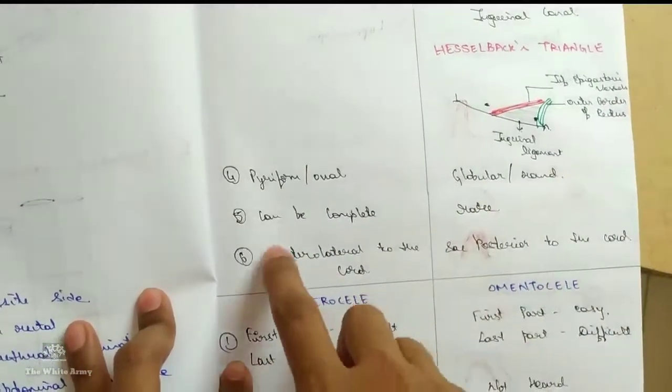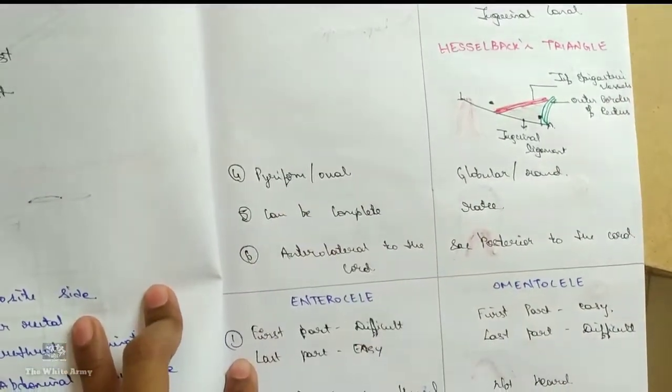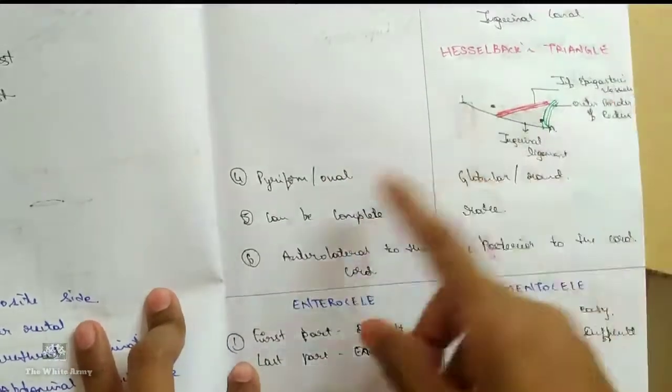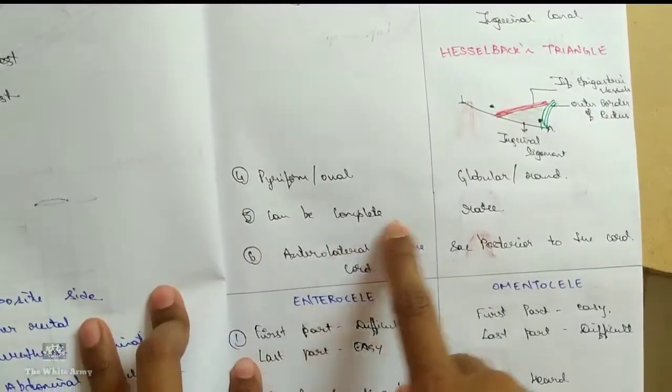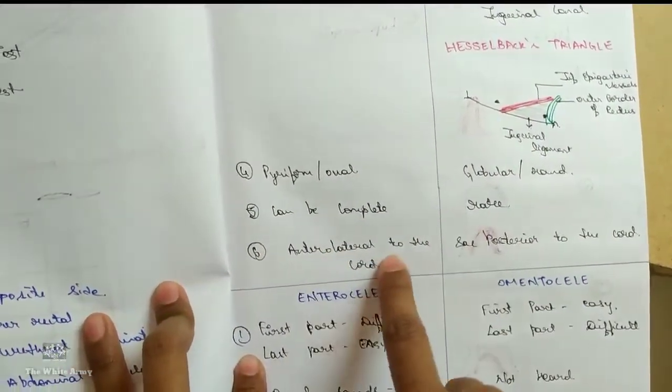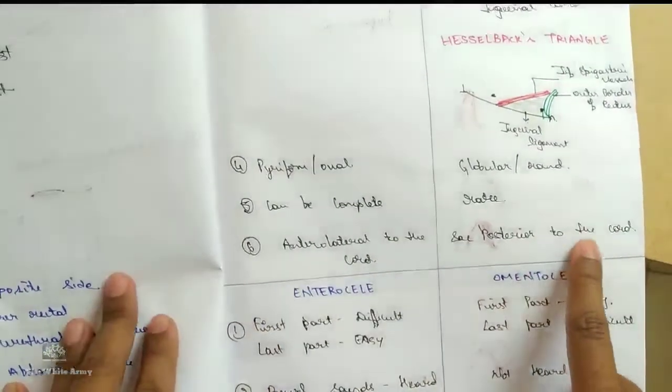It is pyriform or oval in shape. It is globular or round in shape. It is pyriform or oval in shape because it has to travel through the tract and then come out. It can be complete. It is very rare. Anterolateral to the cord, posterior to the cord.